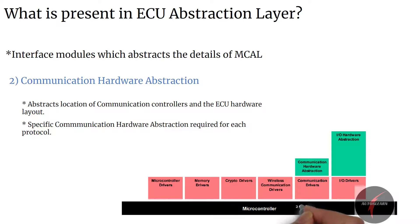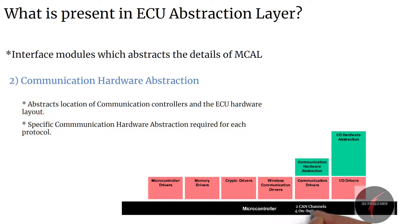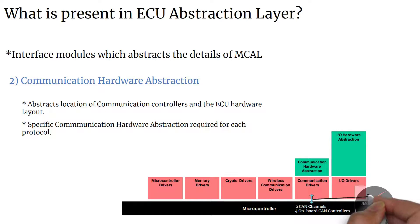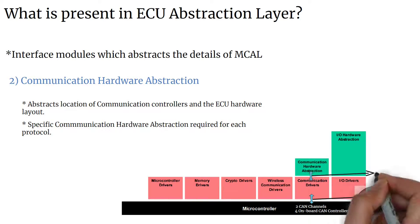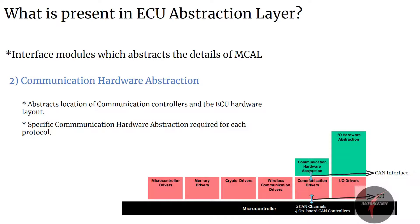For example, an ECU has a microcontroller with two internal CAN channels and an additional on-board ASIC with four CAN controllers. The CAN ASIC is connected to the microcontroller via SPI. The communication drivers are accessed via the bus-specific interface, for example the CAN interface.